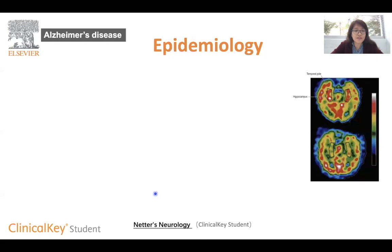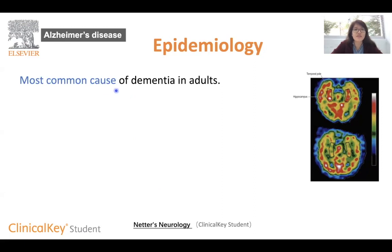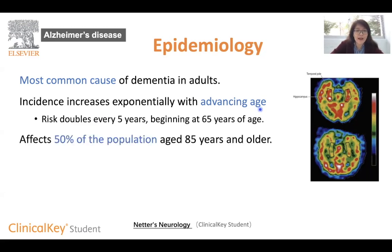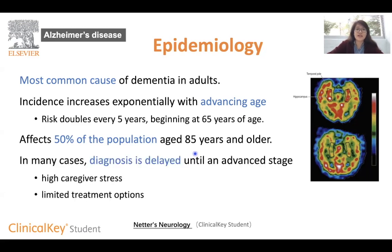In the second half of the video, we look at basic information about Alzheimer's disease. It is the most common cause of dementia in adults. After age 65, the risk of Alzheimer's disease doubles every five years, making age a very significant risk factor. More than half of the population aged 85 and older are suffering from Alzheimer's disease. In many cases, diagnosis is delayed until a very late stage, when caregiver stress is very high and limited treatment options remain.